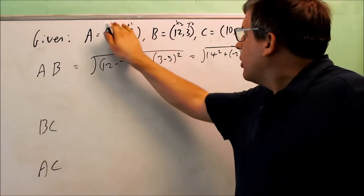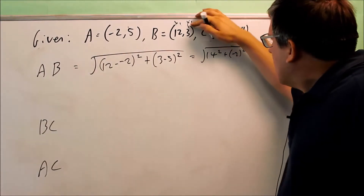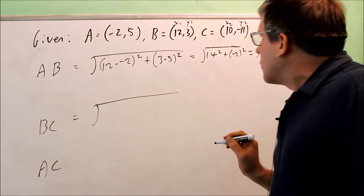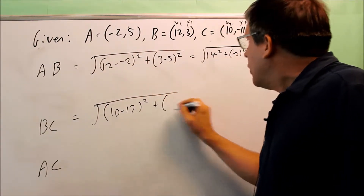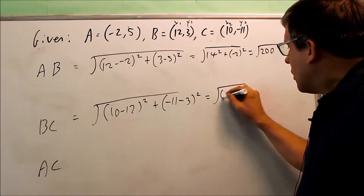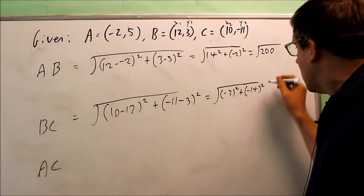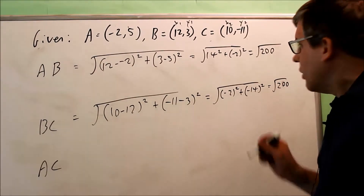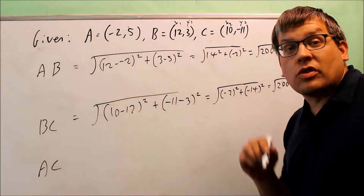Next, I want to find the distance from B to C. I relabel my points: B is X1, Y1 and C is X2, Y2, and put them into the distance formula. The difference in X's is 10 minus 12, and the difference in Y's is negative 11 minus 3. That gives me negative 2 squared plus negative 14 squared — the same two numbers as before — so I get the square root of 200 again. Because these are both the same, this is definitely an isosceles triangle, since two sides are equal.